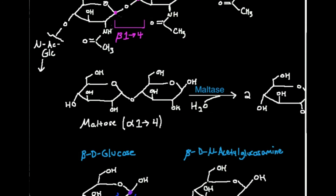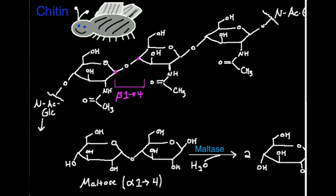Now let's talk a little bit about chitin. You see this little insect up here — why is he happy? Because he's protected by chitin. A lot of polymers have special properties that make them very strong and resilient. Chitin is a very strong polymer made up of repeating units of N-acetyl-glucosamine. One property is whether they're branched or unbranched. Chitin is unbranched — meaning it has linear repeat units. It just goes in one linear chain of N-acetyl-glucosamine on and on.